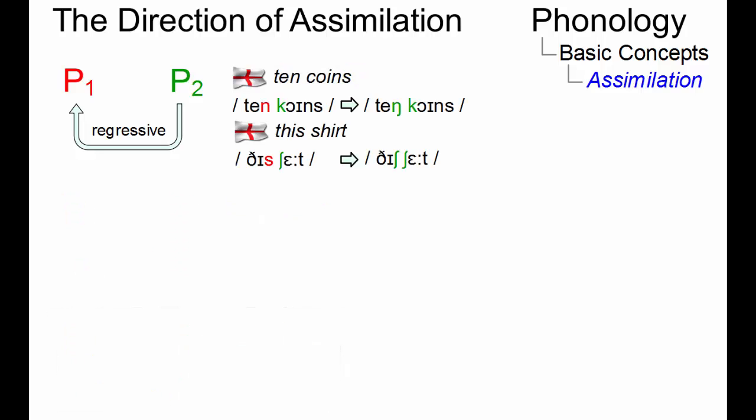Regressive assimilation, as in ten coins or this shirt, typically occurs when a word final consonant, mostly an alveolar one, is assimilated to the first consonant of the next word.